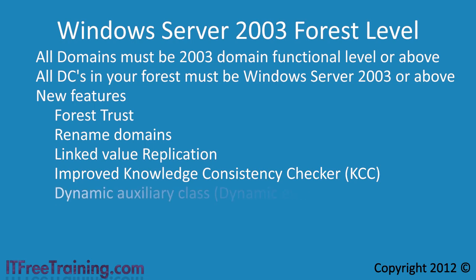The fifth feature is called Dynamic Auxiliary Class, also referred to as Dynamic Entry. This is basically the ability to create an object in Active Directory that has a time-to-live value associated with it. Having a Dynamic Entry means an application can store an object in Active Directory and have it expire after a certain period of time — say after a day — and Active Directory would then automatically remove the object without the application having to do anything.